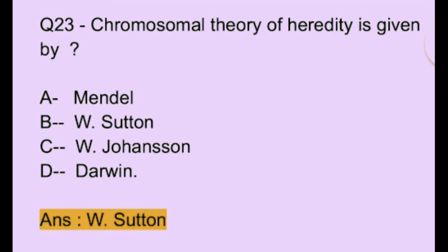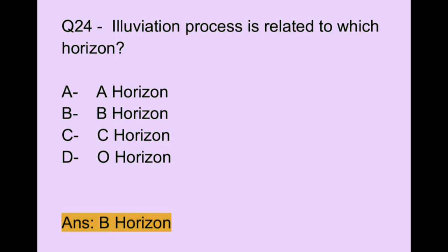Question number 23. Chromosomal theory of heredity is given by: Option A: Mendel. Option B: W. Sutton. Option C: W. Johnson. Option D: Darwin. The correct answer is option B, which is W. Sutton.